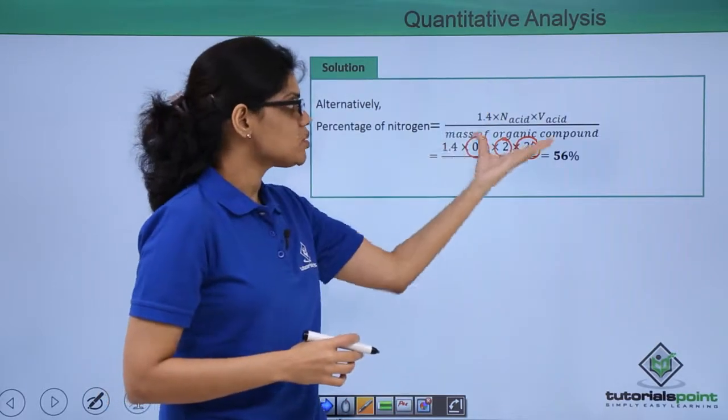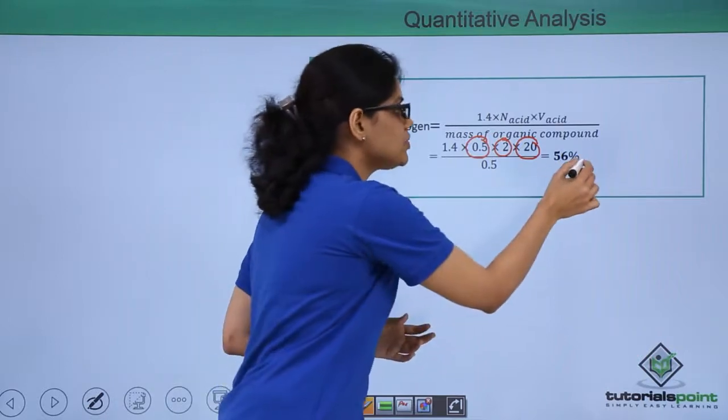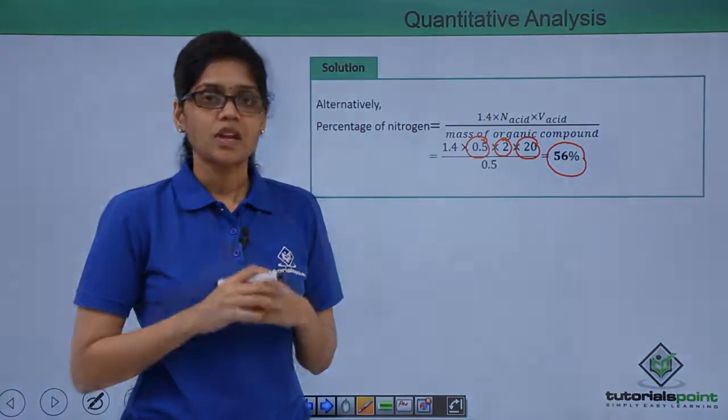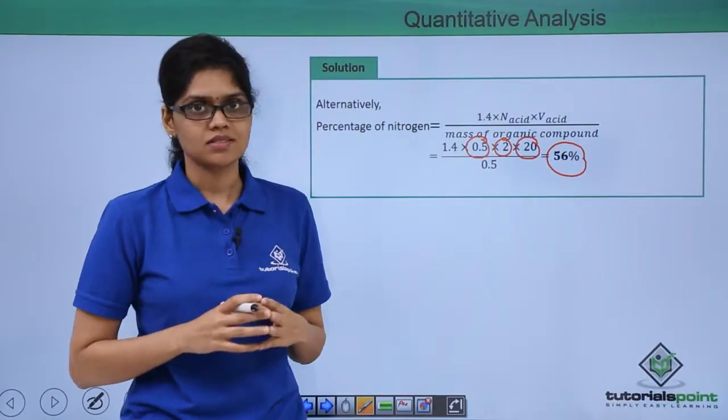By simply substituting these values here you get exactly the same answer, that is 56% of nitrogen in this particular organic compound. I hope you are very clear on how we have arrived at this particular final answer. Thank you.